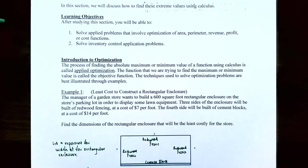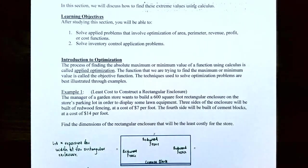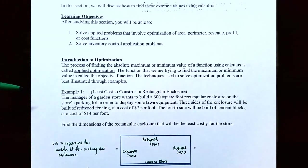The function that we are trying to find the maximum or the minimum value of is called the objective function. The techniques we're going to use to solve applied optimization problems are best understood by doing examples. So let's try Example One: The least cost to construct a rectangular enclosure.